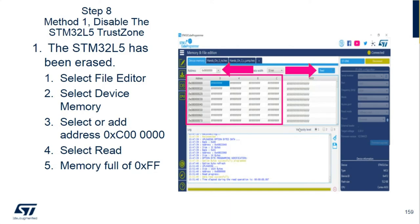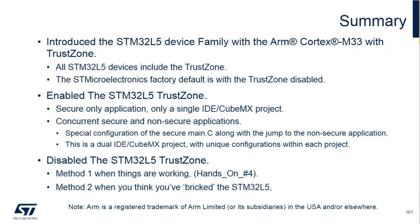This concludes hands-on session number four. Method two would be the method to use if you brick the device and need to invoke the RSS. You can try that at your own pace. To summarize what we learned today in this nine-part series: we introduced the L5 device with the Cortex-M33; we learned that all STM32 L5s include the TrustZone — you either turn it on or off, and the factory default is off. When you enable the TrustZone with only a secure application, it's a single IDE project; when you have concurrent secure and non-secure applications, it's a dual-project setup.